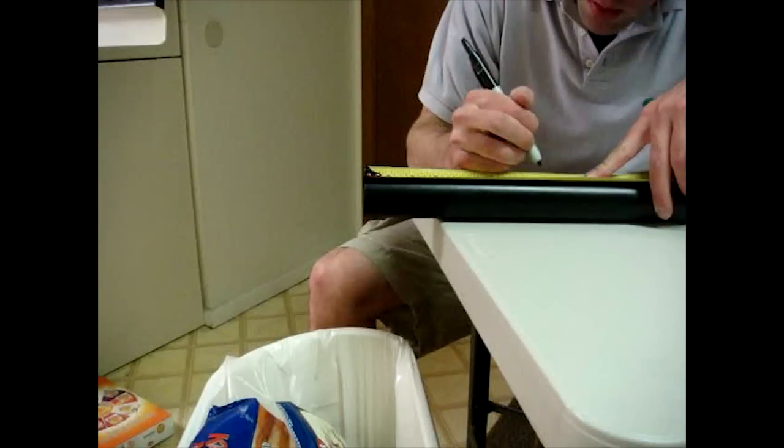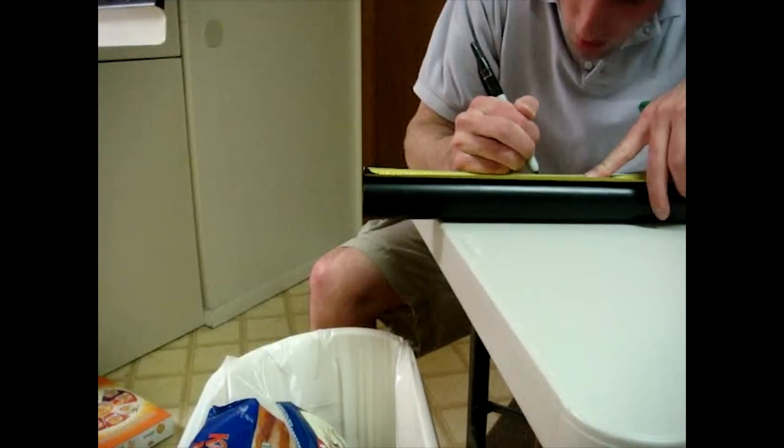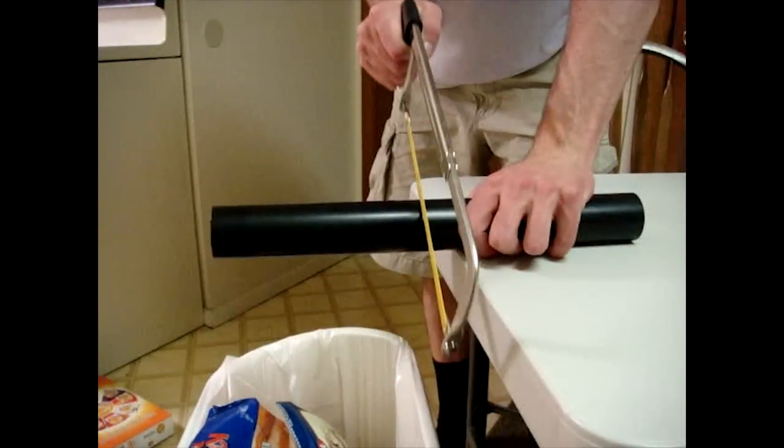The first step in making your tube and bracket assembly is to measure eight inches on your tube and cut it with a hacksaw.